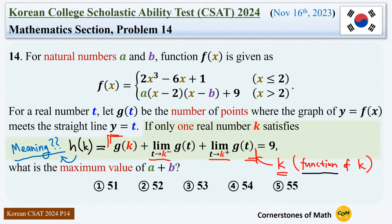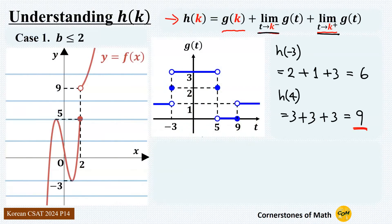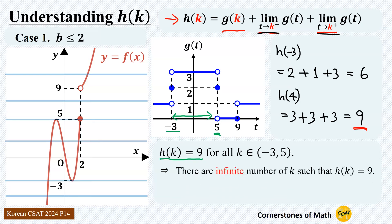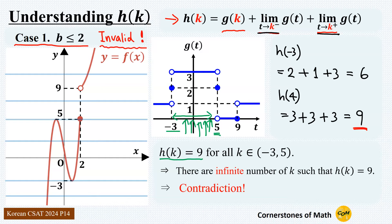However, the problem says only one real number k satisfies h(k) equals 9. But in this case, all values of k between minus 3 and 5 give h(k) equals 9 — not just one, but infinitely many. This contradicts the given condition, meaning this case is invalid.